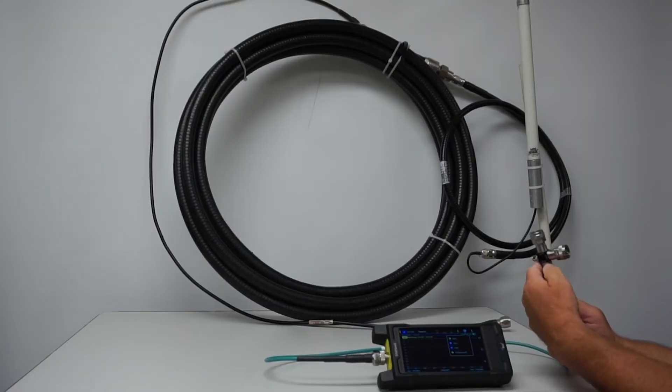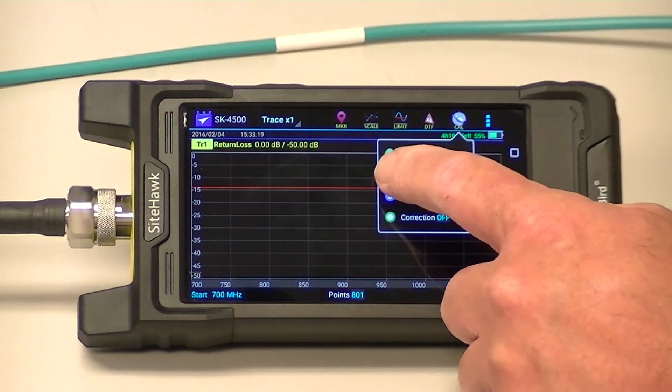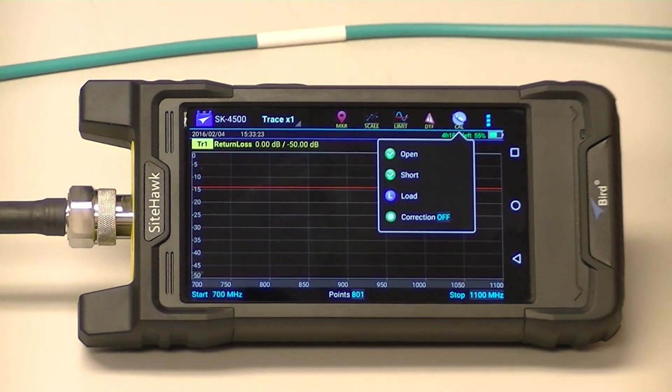Now I go to my next step. Remove the OPEN and connect the SHORT. I would press SHORT. I get the green circle with the check.